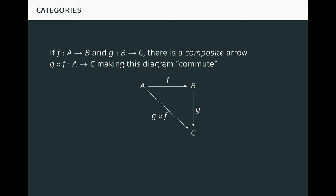The diagram is said to commute because, starting at A, you can either go across to B along F, and then down to C along G, or you can go diagonally from A to C along the composite and get the same result. Commutative diagrams like this are used frequently in category theory, because they provide a way to visualize what's happening in a category.